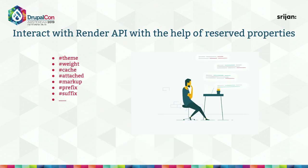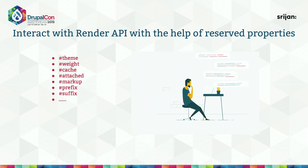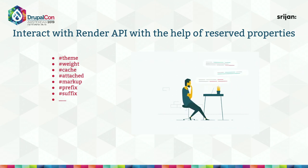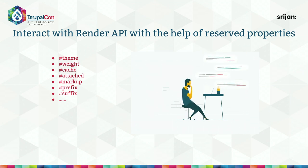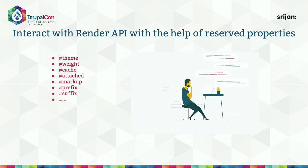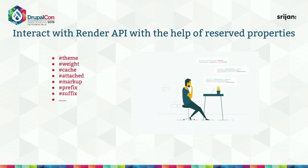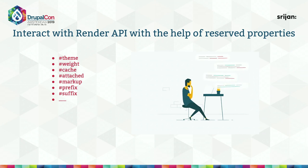Some reserved hash key properties available when interacting with Render API include: #theme (already seen), #weight (float or integer value used to decide the order in which output is printed), #cache and #attached (covered later), #markup (used to provide raw HTML), and prefix/suffix (to print content before or after the markup).